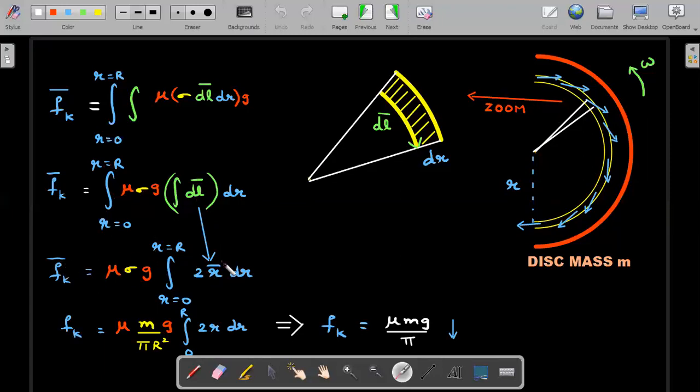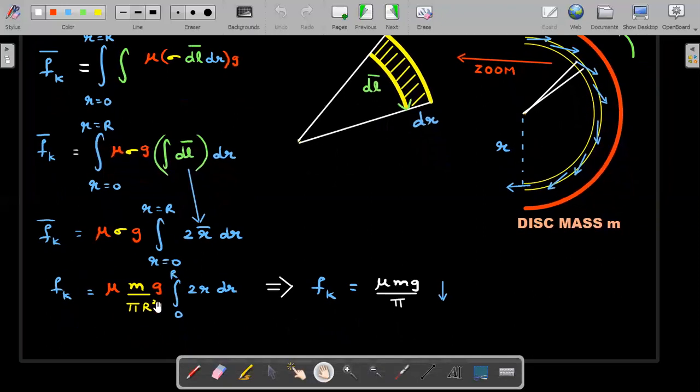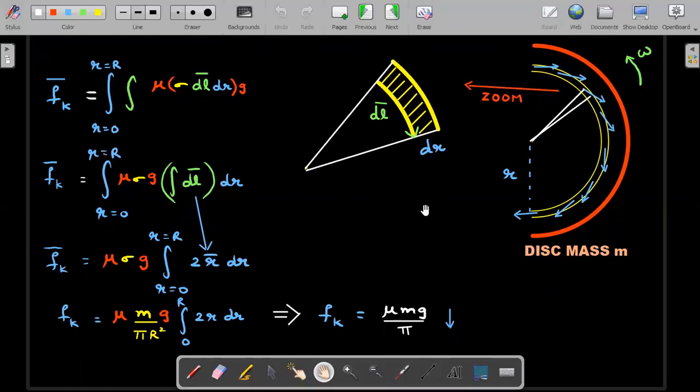The net frictional force would be along the diameter. Once I know the direction, I'll remove the bars and do the scalar integration of 2r dr from zero to capital R. Sigma is substituted as m/πR² and end up getting F_K equals μmg/π, which is in the direction along the diameter. There are many other ways of solving the same problem by taking half rings, but I wanted to show everything in one integral, and that's why I took forward the double integration.